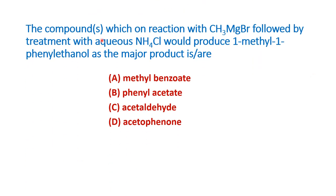The question is: the compound or compounds which on reaction with methyl magnesium bromide followed by treatment with aqueous ammonium chloride would produce 1-methyl-1-phenyl ethanol as the major product. Note that this is not the correct IUPAC nomenclature of this particular compound; we will see the correct nomenclature in the next few slides.